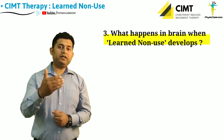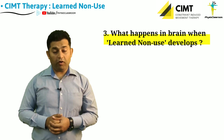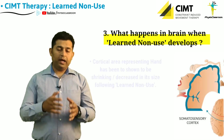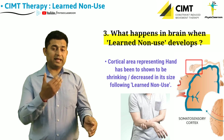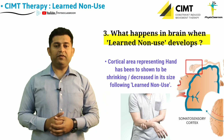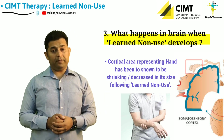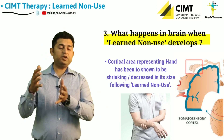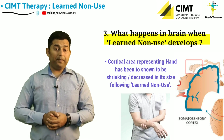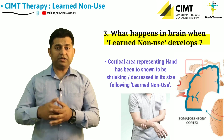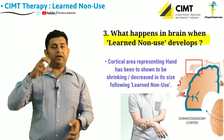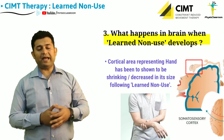As a result of this tendency not to use the weaker side upper limb, it has been shown through research and transcranial magnetic stimulation (TMS) that the cortical territory representing the weaker side upper limb and hand has shown to be shrinking and reducing in its size.